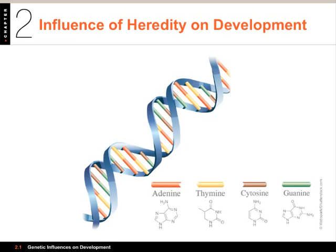By the way, if you ever saw the movie Gattaca, it had a lot to do with genes - the word Gattaca is spelled with all A, T, C, and G. The sequence of the rungs and the genetic code is what causes the developing organism to grow, say, arms or wings if it's going to be a bird, or skin or scales. It's what makes the difference between different biological organisms.